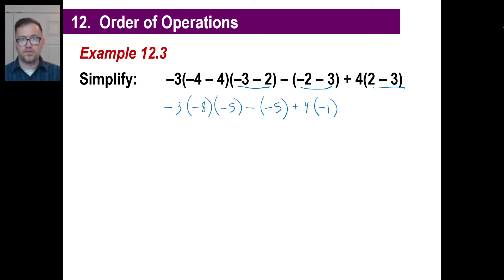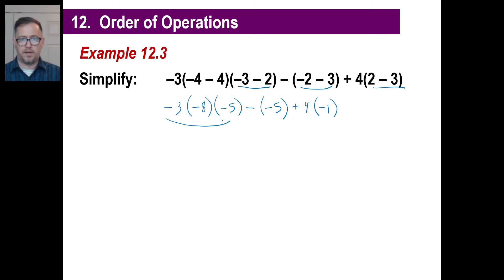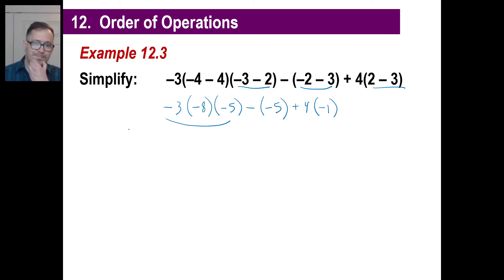That's half the size, and you've greatly reduced your possibility of errors. This is all one big multiplication problem. Negative 8 times negative 5 is positive 40.